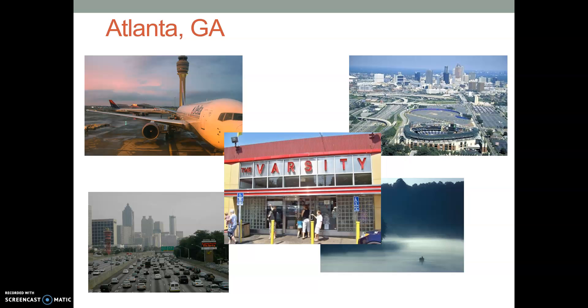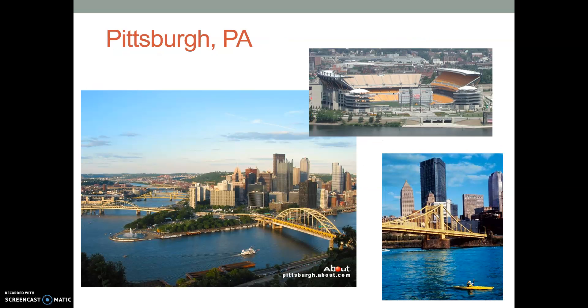So — three physical, three cultural. Pause the screen, jot a few down, then unpause and see how you did. First one: Pittsburgh, Pennsylvania. All right — physically, we know there's a lot of water resources, looks fairly hilly with rolling hills, that's topography, a lot of different vegetation with the trees, and it looks like a pretty temperate climate — not too hot or too cold. Cultural features: it's very urban, got a lot of infrastructure, water transportation is big, they like to be entertained — if you're a Steelers fan, this is Heinz Field — it's a very urban, business-centered area.